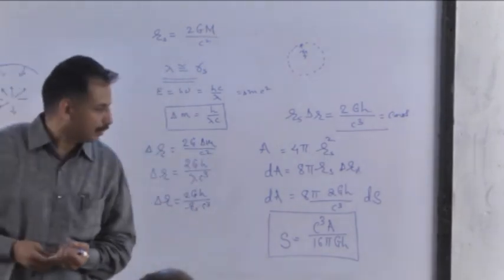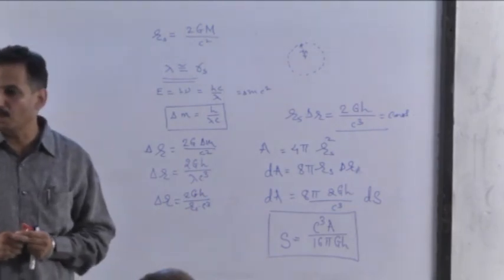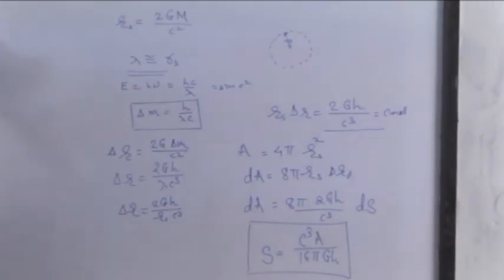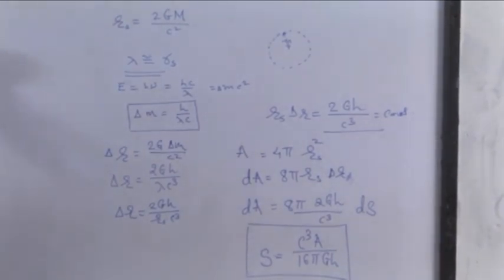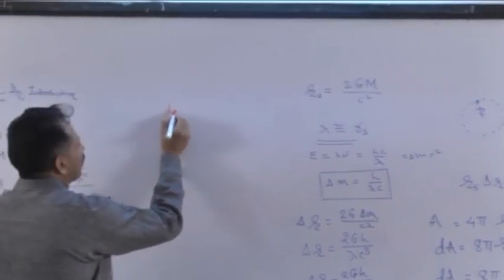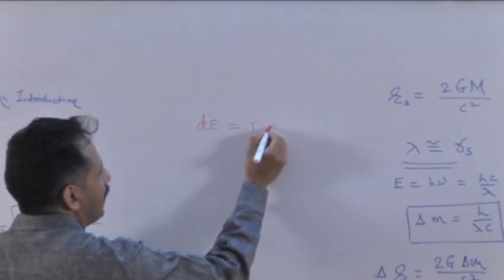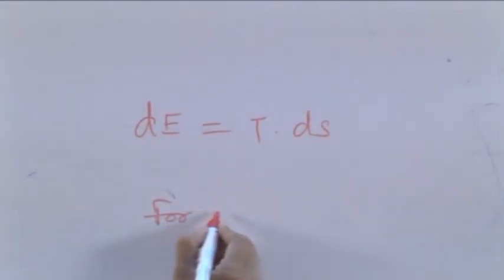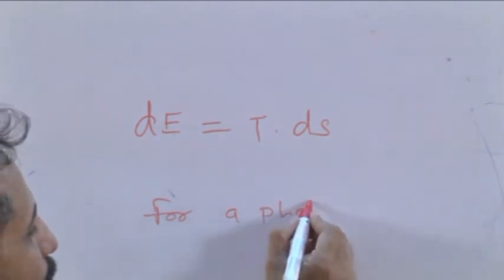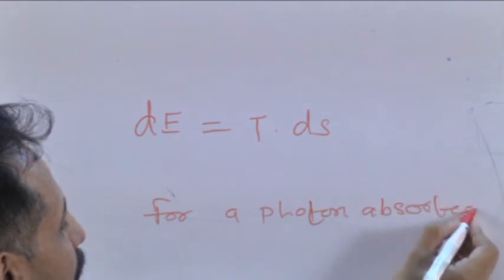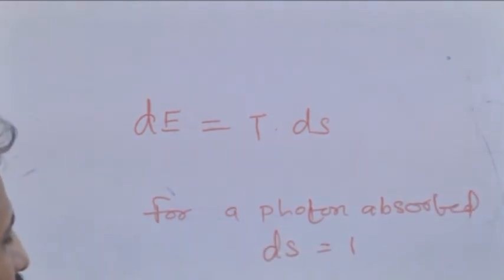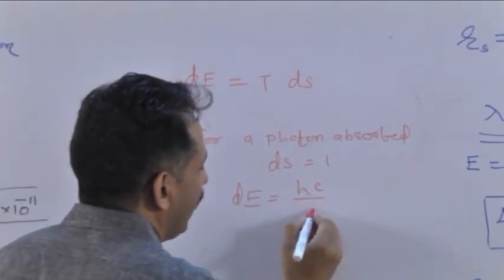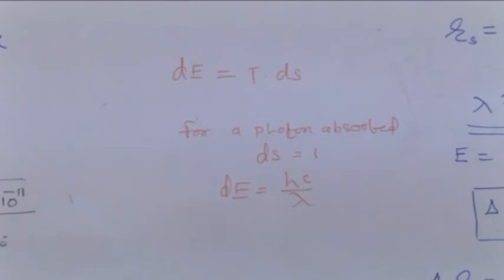Now, using second law of thermodynamics, we can find expression for temperature of black hole. We know second law of thermodynamics states that dE is equal to TdS. Now, if one photon is absorbed, the change in entropy is 1. For a photon absorbed, the entropy change is 1. And for a photon, dE is hν, which is hc by lambda. For a photon, the energy is hc by lambda.